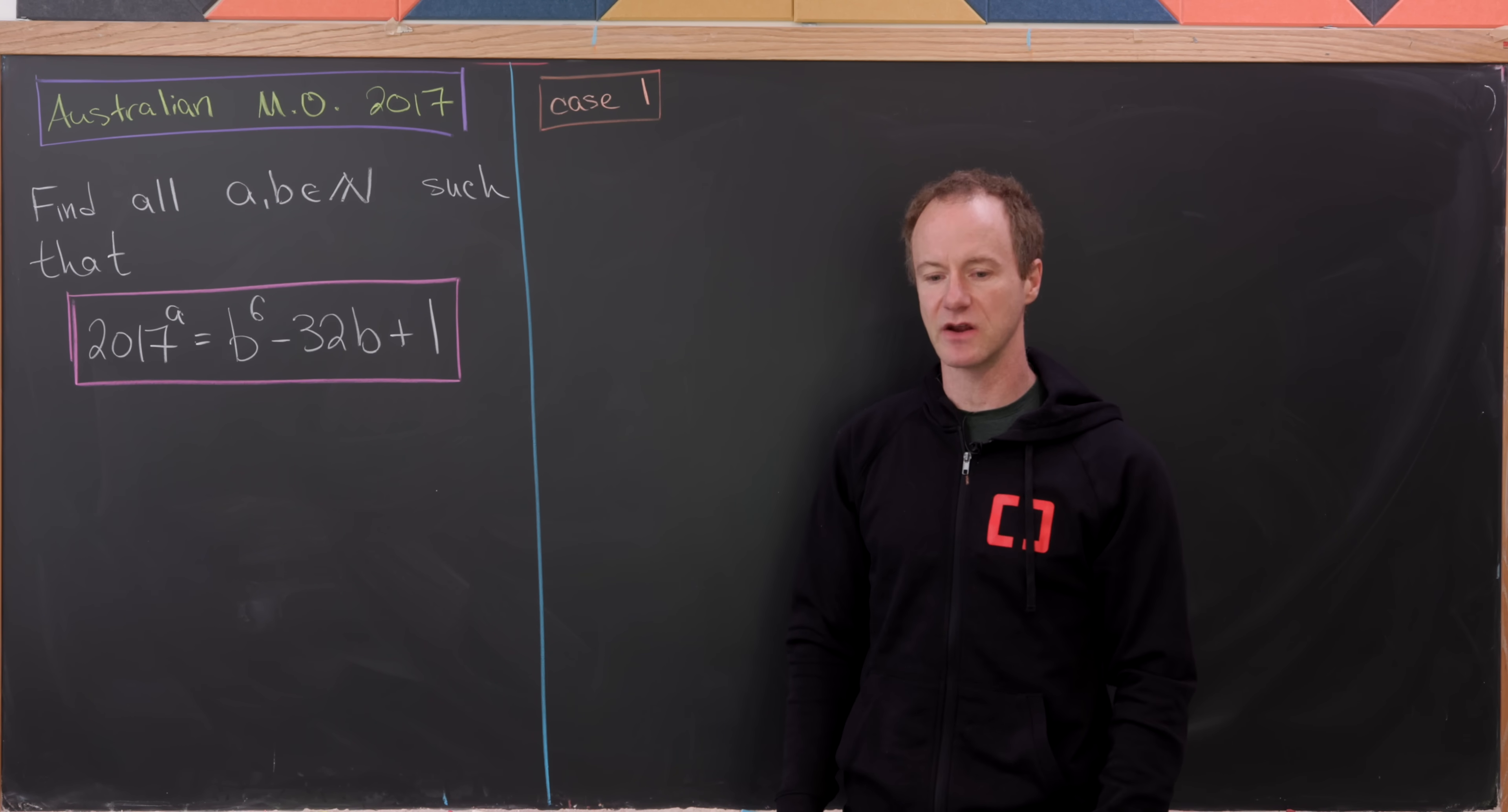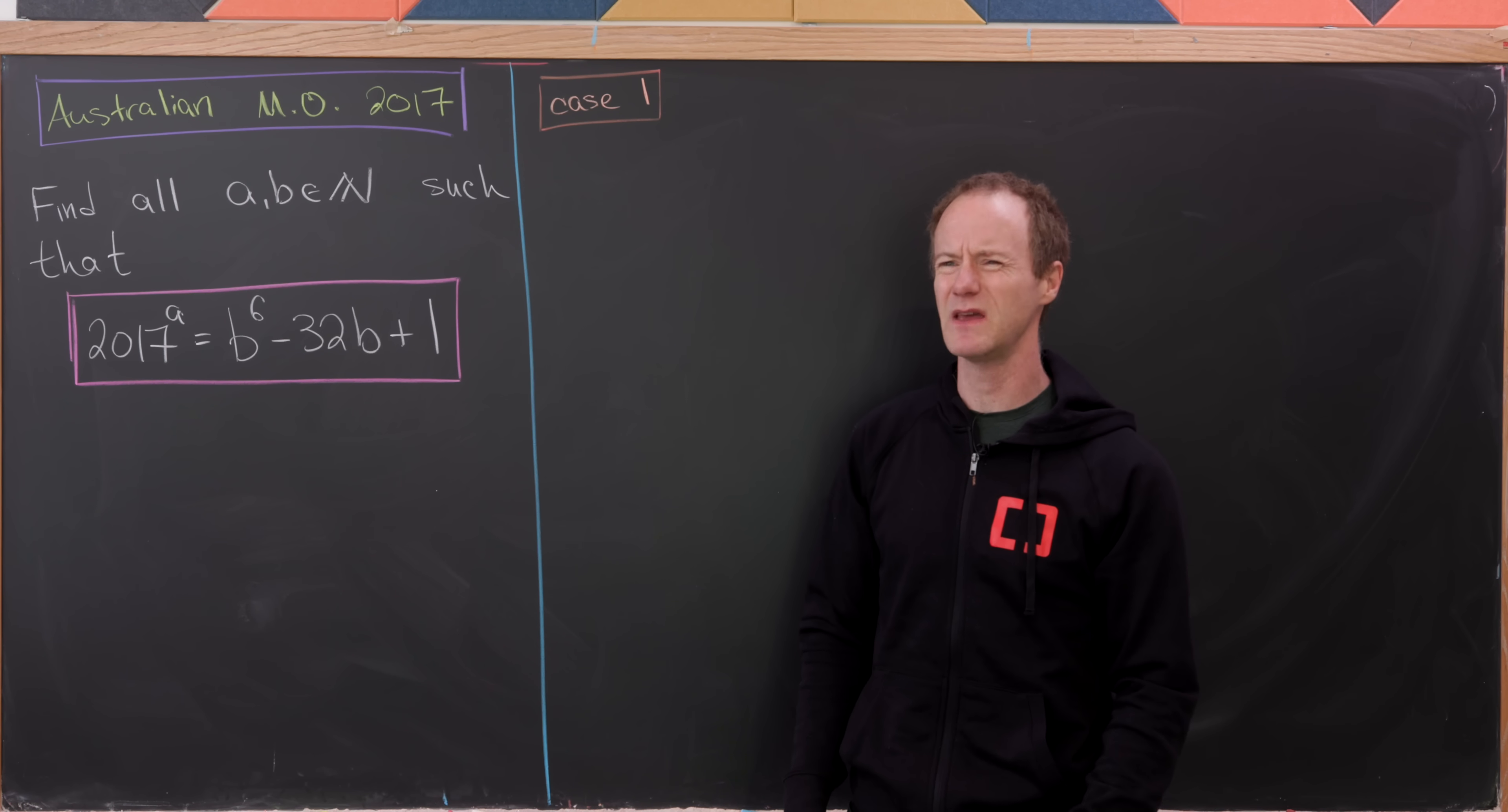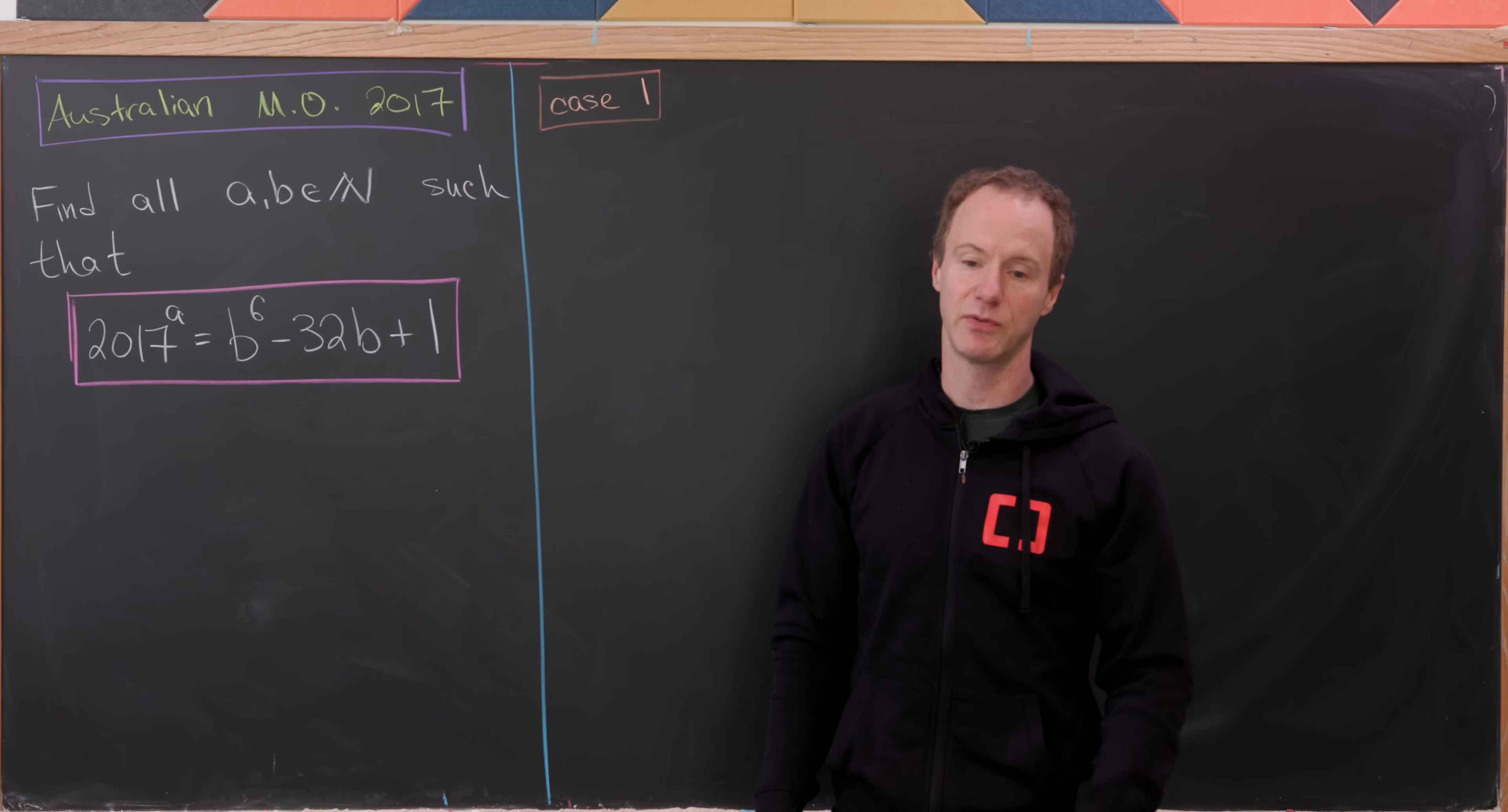I'd like to point out that by natural numbers I mean positive integers. You can solve this to include 0 as well. Maybe I'll leave that to you to do on your own. It's fairly straightforward. There are only a couple of solutions when A and or B are equal to 0.